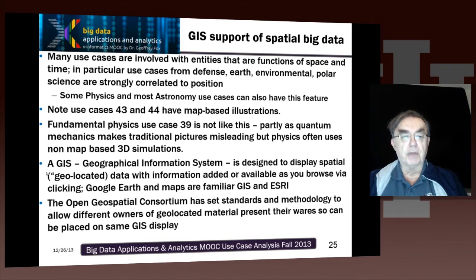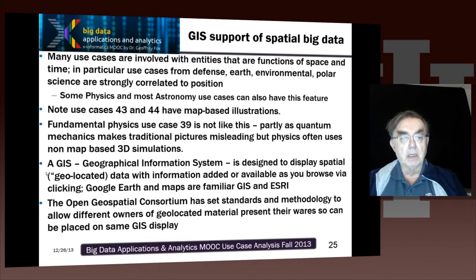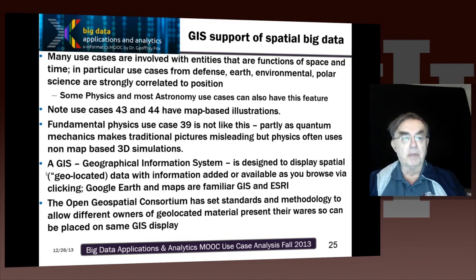Use cases 43 and 44, which we went through — the photo science and earthquake science applications — have map-based illustrations. Although in some physics cases we don't have GIS, because if you're looking at the very shortest scales, a map is not so useful. So particle physics does not use that.